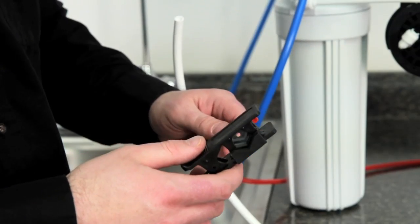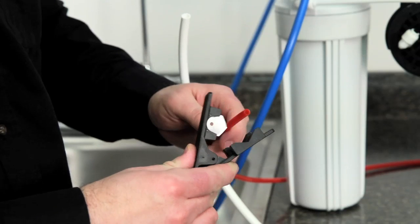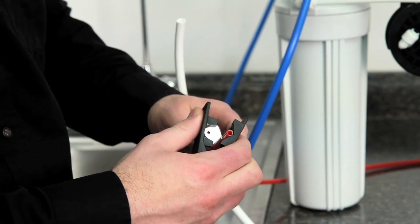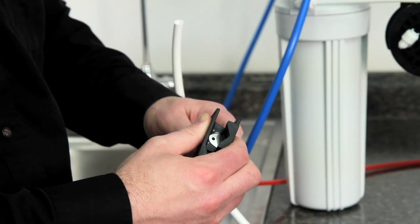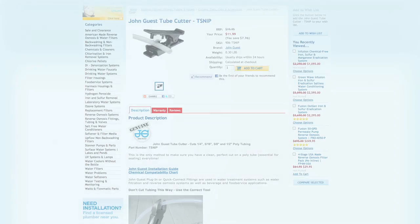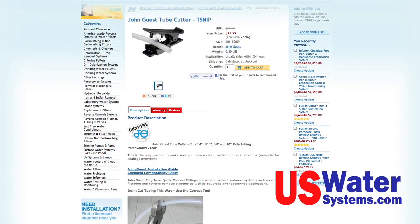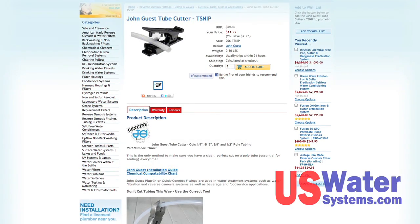If the tubing is too long, you can cut the excess off with a John Guest tube cutter or razor knife. You can leave the length on the tubing if you like. This will allow you to take the manifold out of the cabinet when it's time to change your filters. You can find this tubing cutter on our website at www.uswatersystems.com. We do not recommend cutting the tubing with scissors.